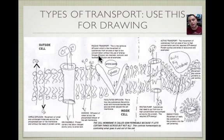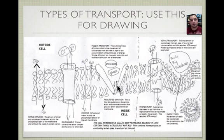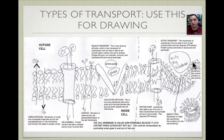Facilitated diffusion handles bigger molecules like glucose and amino acids going in and out. When the molecule attaches to the carrier protein, the protein undergoes a conformational change — it turns and folds to bring the substance in, making it easier. That's facilitated diffusion — 'facilitated' means made easier.